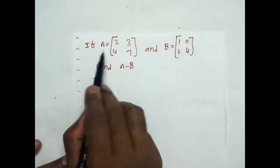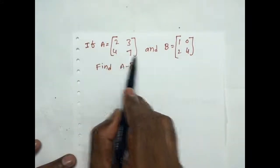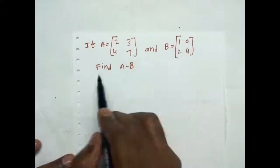Here is the first one. If A is equal to 2, 3, 4, 7 and B is equal to 1, 0, 2, 4, find A minus B.